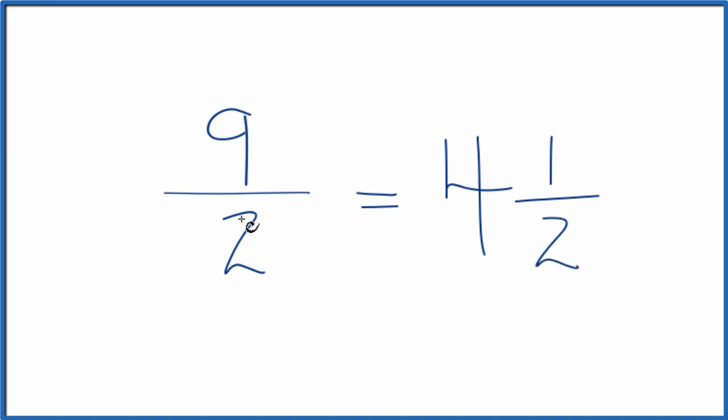So we've converted 9 halves down to the mixed number 4 and 1 half. These are equal, they're equivalent. But in answer to our original question, we really can't reduce the fraction 9 halves because it's already in lowest terms.